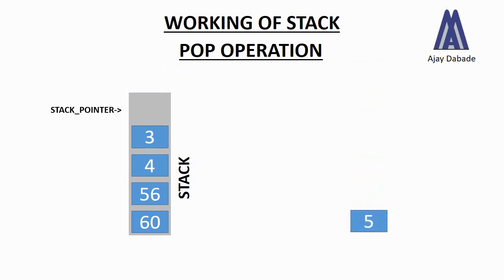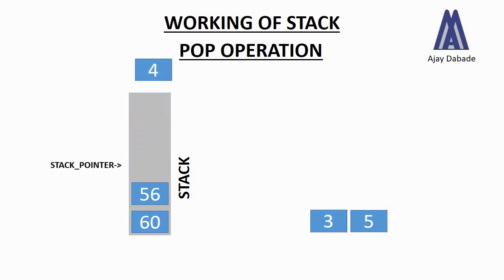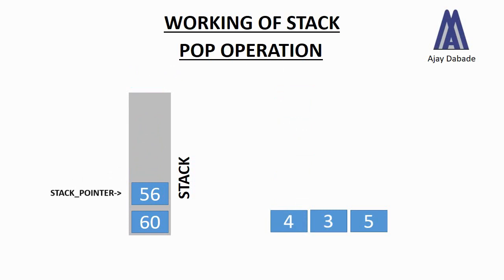Number 5 has been removed from the stack, and now the stack pointer will get decremented and point to number 3. If we again perform the pop operation, number 3 will be popped from the stack and again the stack pointer will get decremented. Performing pop again, number 4 will be popped from the stack, and again the stack pointer will get decremented.